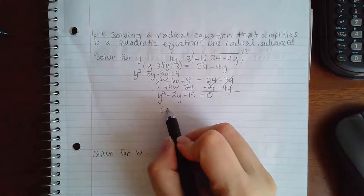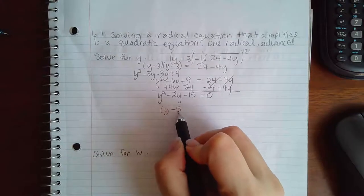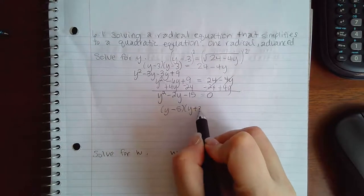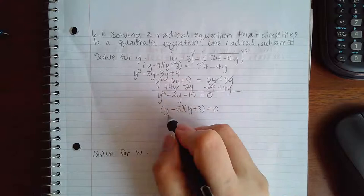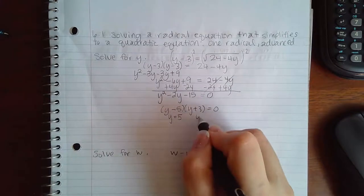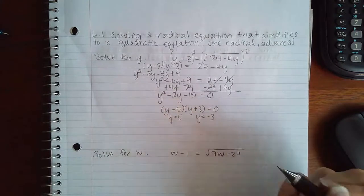So then here I will factor this into y minus 5 and y plus 3. So I get y equal to positive 5 for this factor and y equal to negative 3 for that factor.